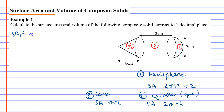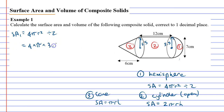Surface area 1 is 4πr² divided by 2. The radius r is the distance from the middle to the edge — since the diameter is 7, r is 3.5. So: 4 × π × 3.5² ÷ 2, which rounds to 77.0 cm² to one decimal place.